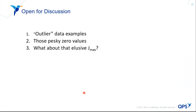That's the quick take on outliers, zero values, and Jmax. As a starting point for discussion — based on the statistical presentation to be presented next and the panel discussion — that's all I have. Thanks.